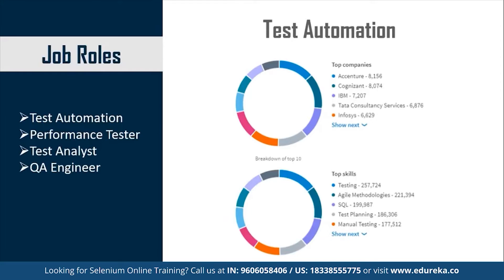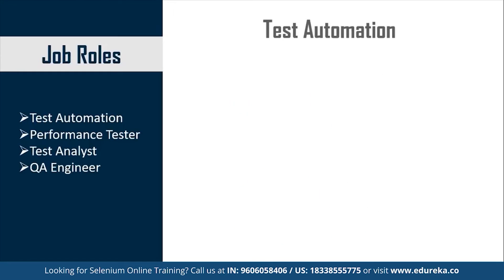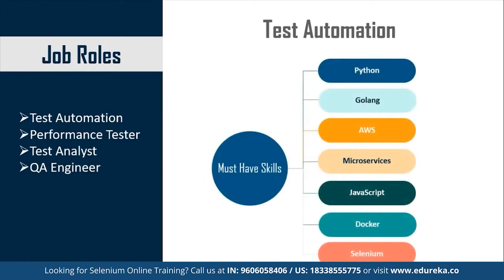The top skills required to become a Test Automation Engineer include knowledge of testing, Agile Methodologies, SQL, Test Planning, and manual testing. Apart from these, you need proficiency in programming languages like Python, Golang and JavaScript. You also need to be well versed with AWS, Microservices, Docker and Selenium. These skills will help you move to a higher position as a Test Automation Engineer and also aid your appraisal.